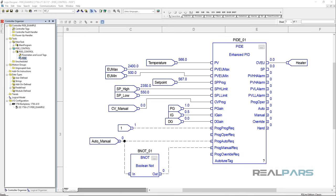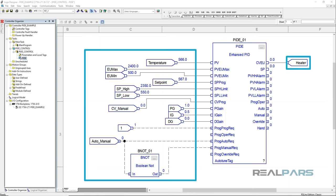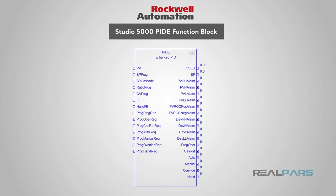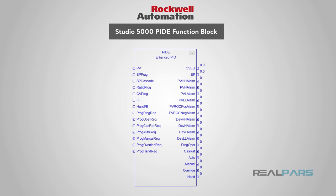Function block programming uses diagrams with symbols to represent functions and input and output connections between functions. While at first this function block can be quite intimidating, it shares similarities with the standard PID instruction and you'll only need to turn on parameters required by your control program. In this example, we will basically get you off the ground using the PIDE instruction and the program options essential to get it working.